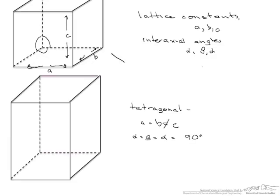We compare that with our cubic structure up here where A equals B equals C and alpha equals beta equals gamma equals 90 degrees.